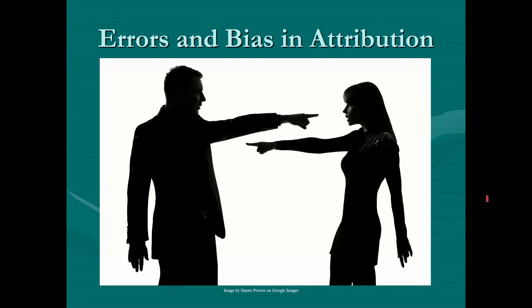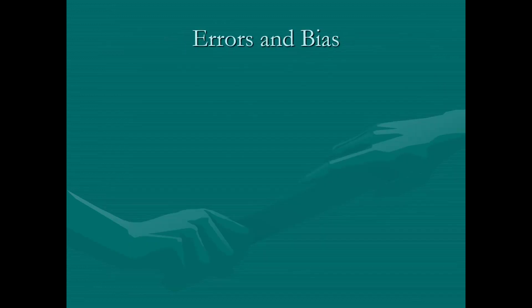Welcome, psychology students, to our short lecture on errors and bias in attribution. Hopefully you've read the information leading up to this point. In terms of attribution, we said that there are a couple of different types: internal, which focuses on personal attributes like personality and attitudes, and external attributions, which are more situational factors. Now we're going to build on that and examine some of the tendencies we've discovered in people.